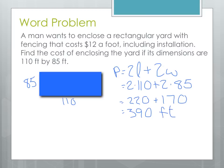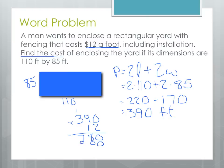But we're not done — we were asked to find the cost. The cost is $12 a foot and we've got 390 feet, so we do 390 times 12 to find the total cost. Starting by multiplying by 2, then putting in the zero placeholder and multiplying by 1, we get a total cost of $4,680.